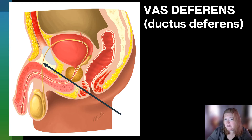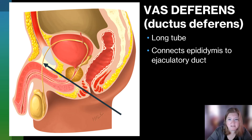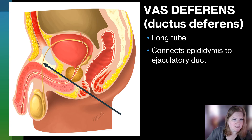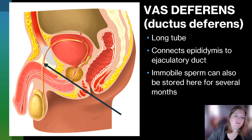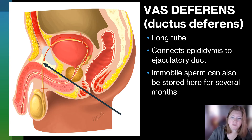We have the vas deferens, sometimes called the ductus deferens. It's a long tube that connects the epididymis to the ejaculatory duct. The immobile sperm can also be stored in the vas deferens for a few months. Also, this is the tube that is cut for a vasectomy — cut and then banded, coiled, or tied. That's why it's called a vasectomy.